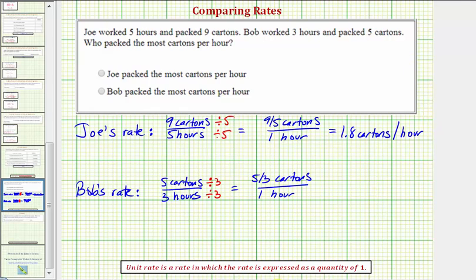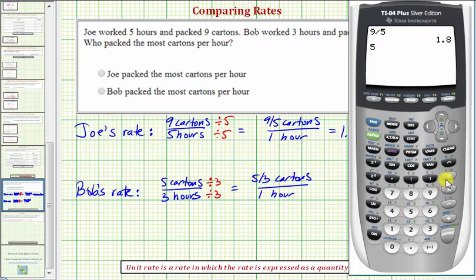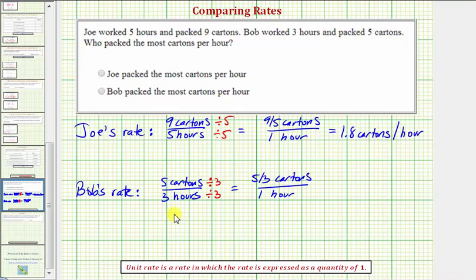And now for Bob, we'd have five divided by three cartons per hour, which notice, even if we round to one decimal place, this would be approximately one point seven. So we'll say Bob's rate is approximately one point seven cartons per hour.